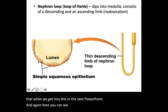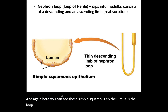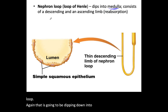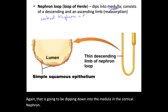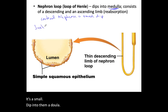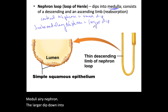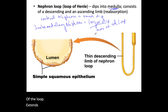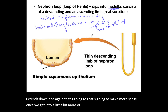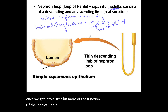Here you can see those simple squamous epithelia in the loop, which dips down into the medulla. In the cortical nephron, it's a small dip into the medulla. In the juxtamedullary nephron, it's a larger dip — more of the loop extends down. That will make more sense once we get into the function of the loop of Henle in the next video.